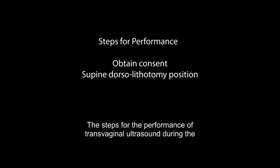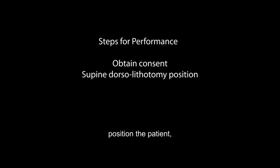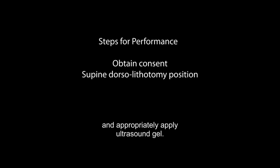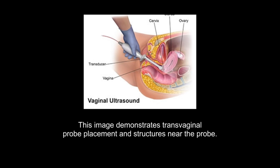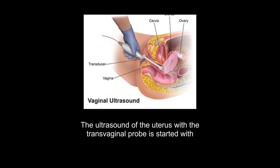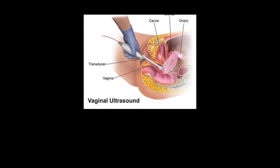The steps for the performance of transvaginal ultrasound during the first trimester are as follows: obtain consent and properly position the patient. Use the proper transvaginal probe and appropriately apply ultrasound gel. This image demonstrates transvaginal probe placement and structures near the probe. The ultrasound of the uterus with the transvaginal probe is started with the notch of the probe at the 12 o'clock position and a mid-sagittal plane is maintained.